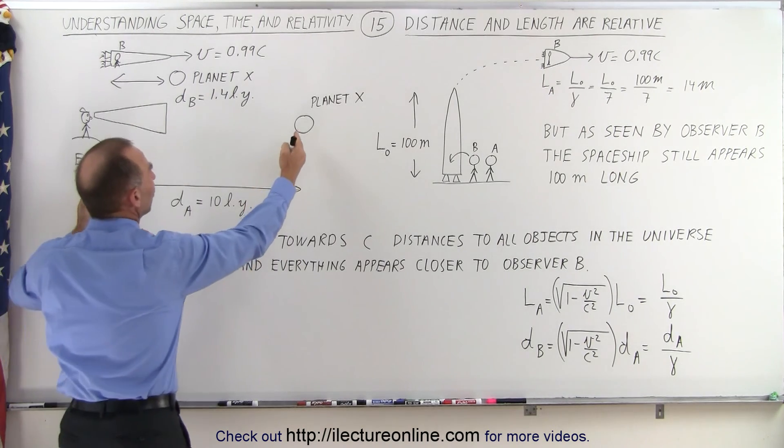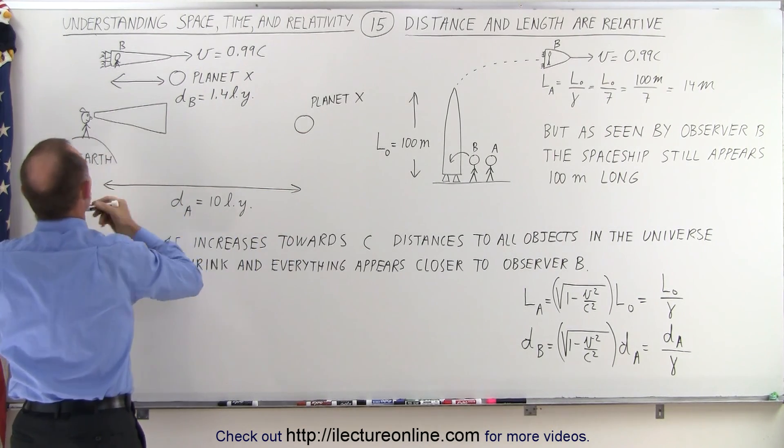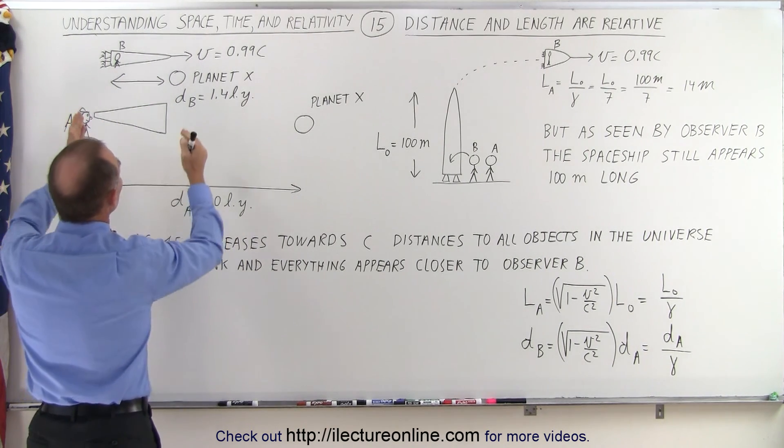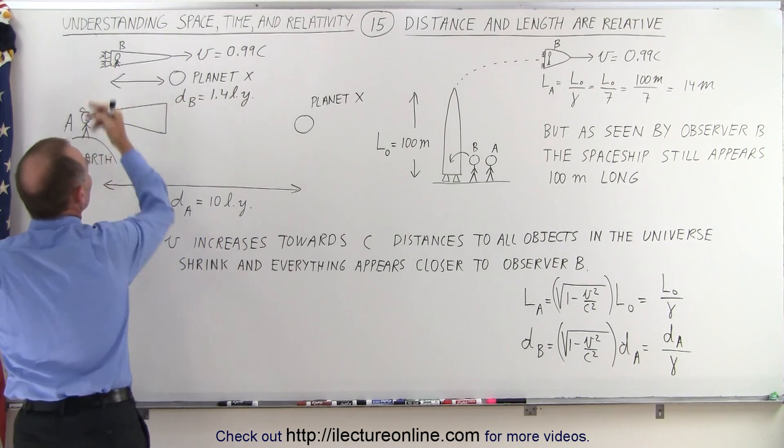So instead of the distance to Planet X being 10 light years, according to Observer A on the Earth, the planet only appears to be one-seventh as far, or about 1.4 light years, to Observer B.